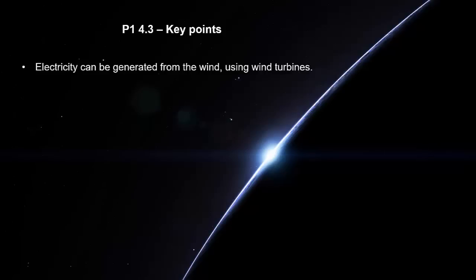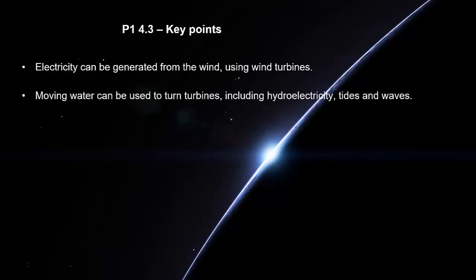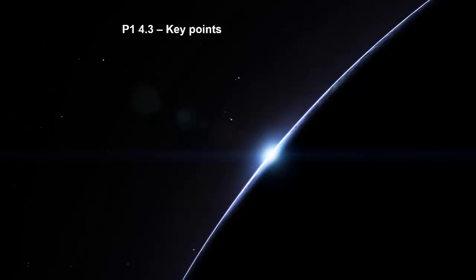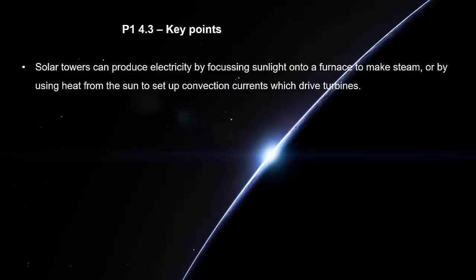Electricity can be generated from the wind using wind turbines. Moving water can be used to turn turbines including hydroelectricity, tides and waves. Solar cells convert light energy from the sun directly into electricity. Solar towers can produce electricity by focusing sunlight onto a furnace to make steam, or by using heat from the sun to set up convection currents which drive turbines. Geothermal energy uses steam from volcanic areas to turn turbines.